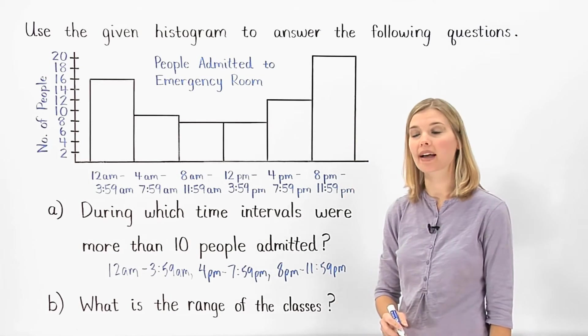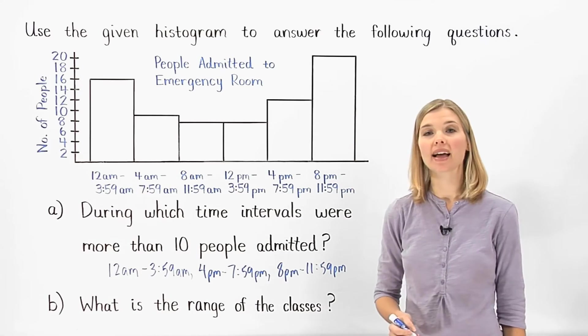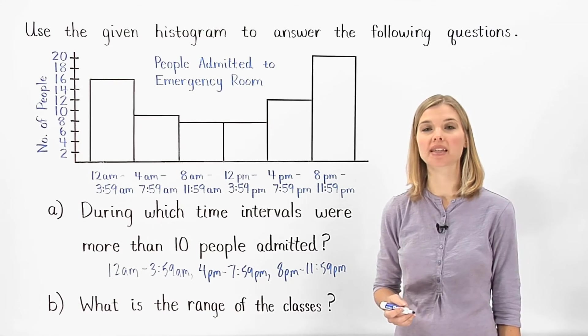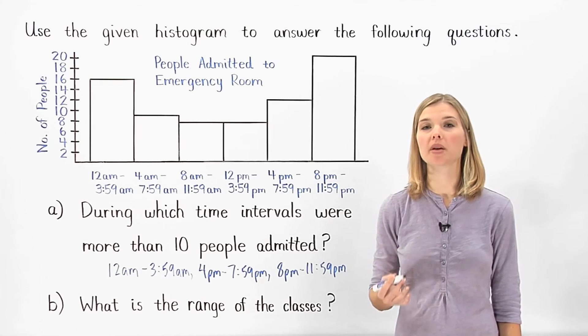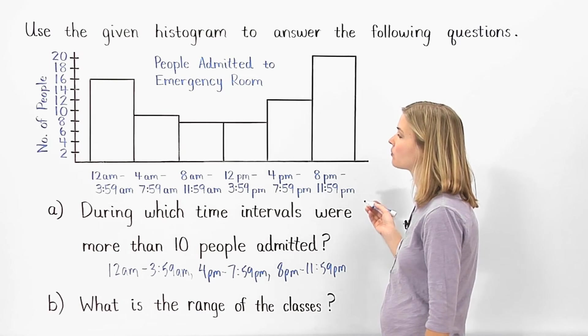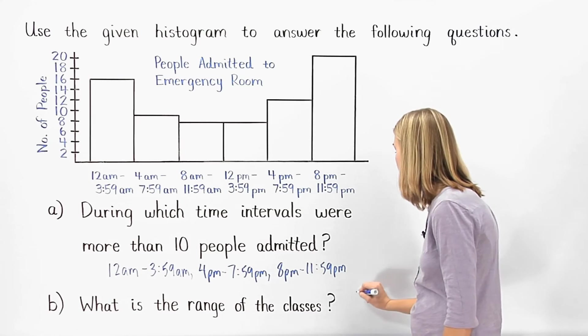In part B, we're asked, what is the range of the classes? Classes is another word for intervals. So, what is the range of the classes means the same thing as, how big is each interval? We can see that each interval is 4 hours long, so the range of the classes is 4 hours.